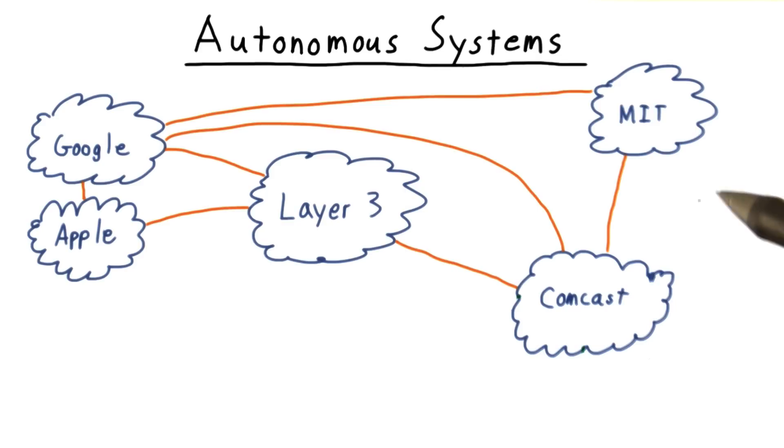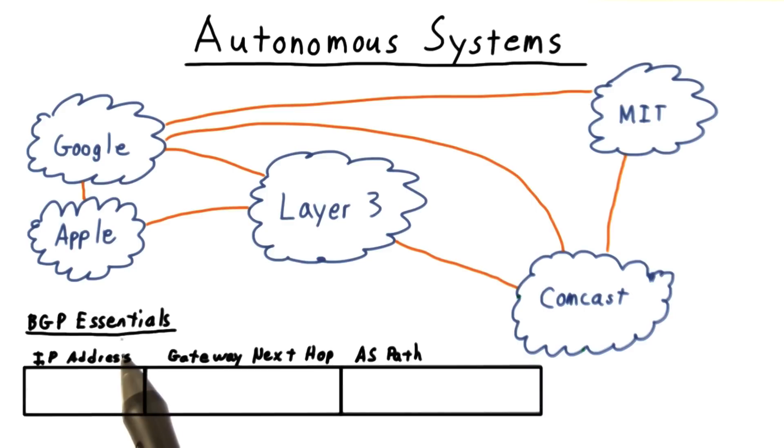The essentials of such an advertisement are the IP address that they're advertising they can reach, the next hop, or the address of the entry point into the advertising AS, and the AS path, which captures the sequence of ASs that a packet along the route would need to travel through.